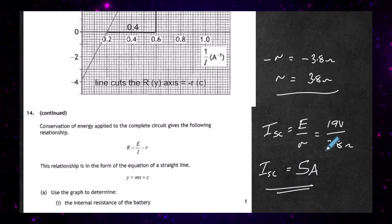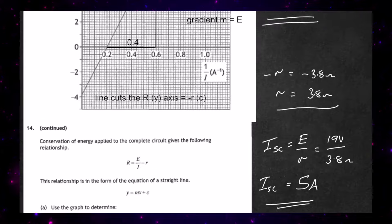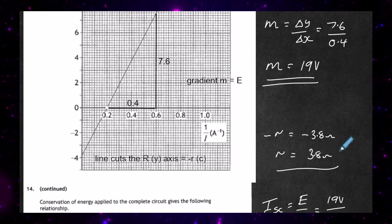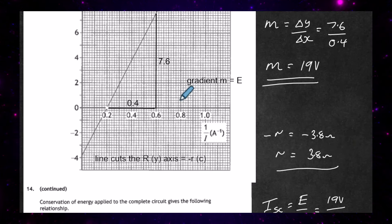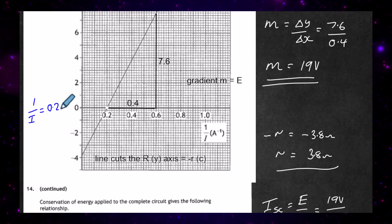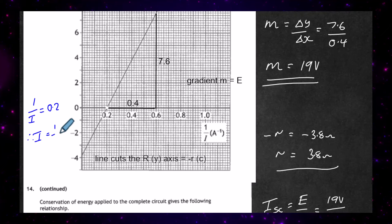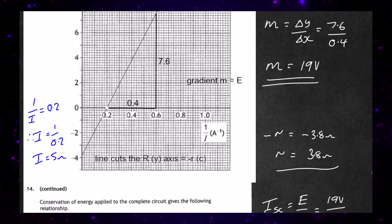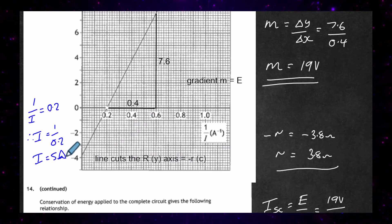We could also get that from the graph. Looking closely, at the point where R equals 0, 1/I equals 0.2. So the current I equals 1 divided by 0.2, which gives a current of 5 amps. Either method gives the same short circuit current of 5 amps.